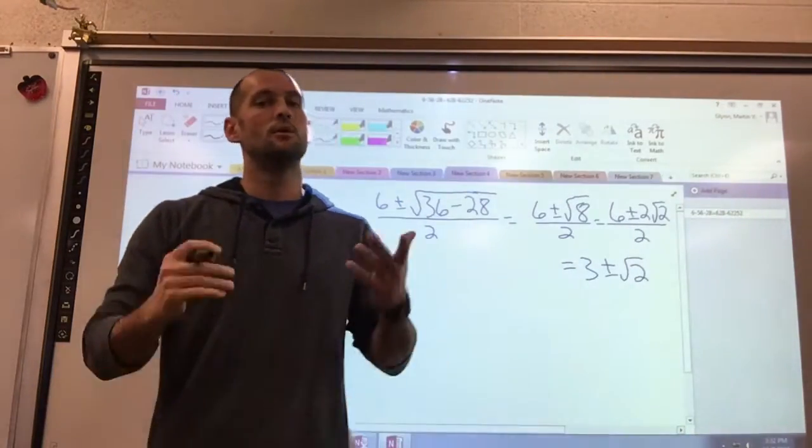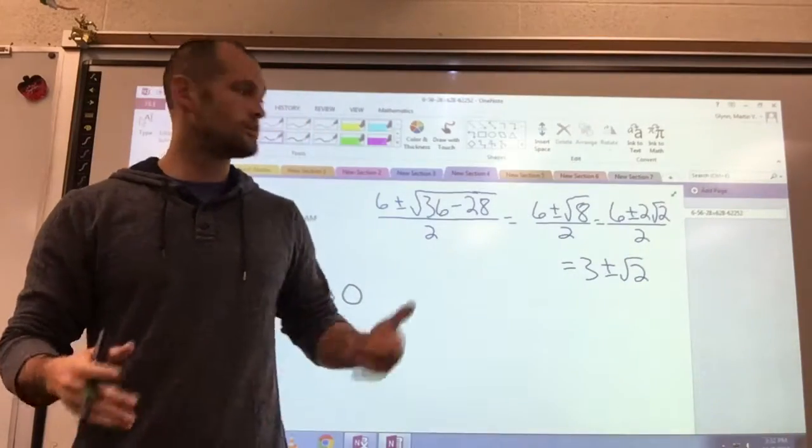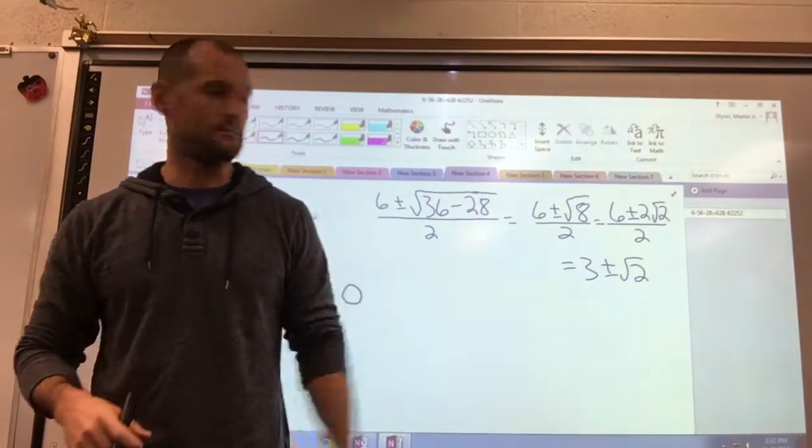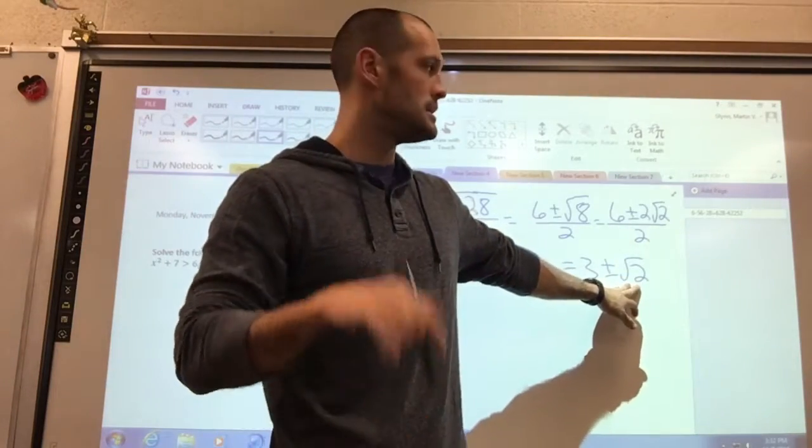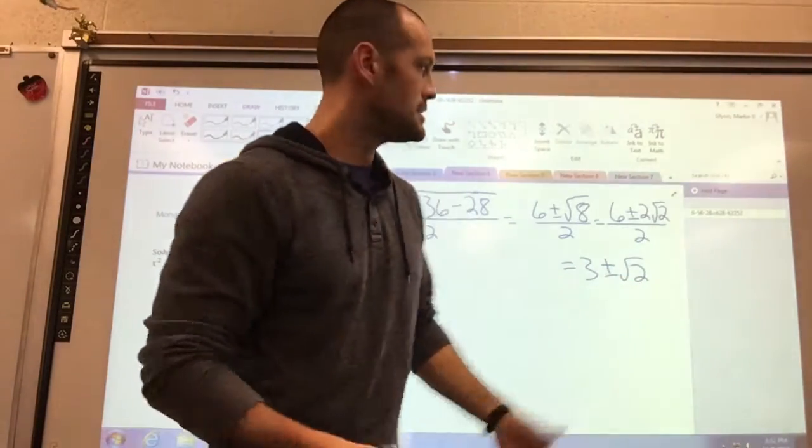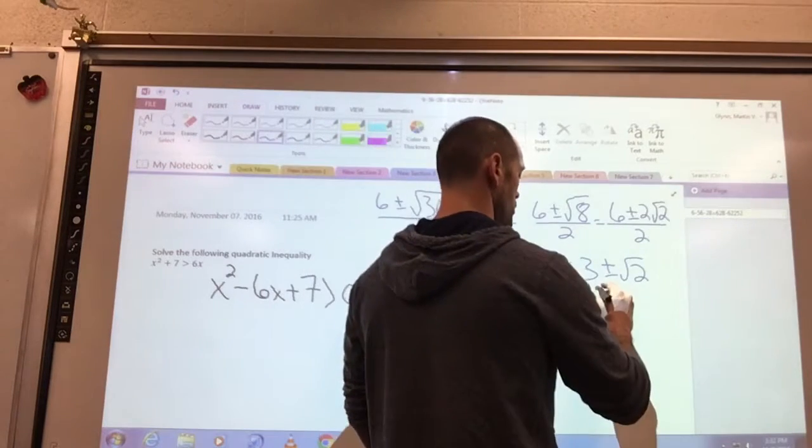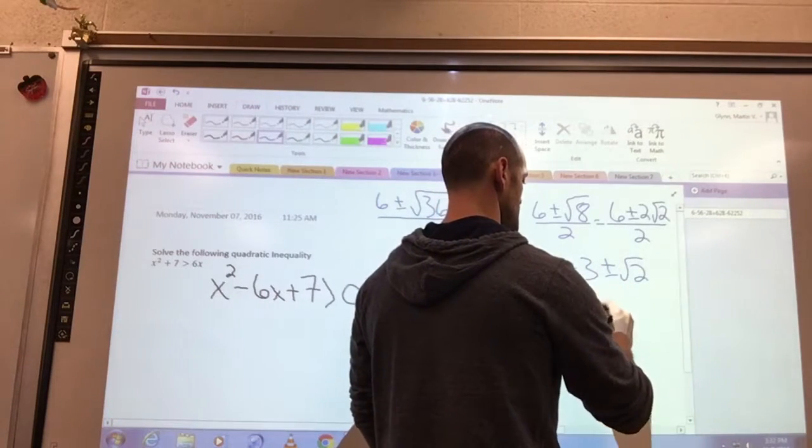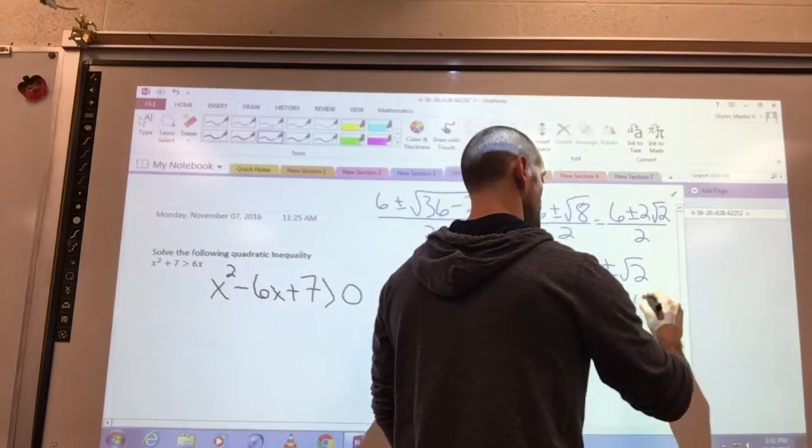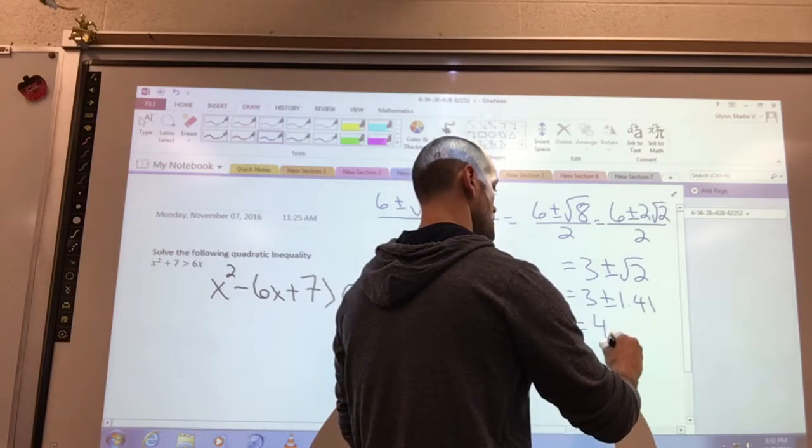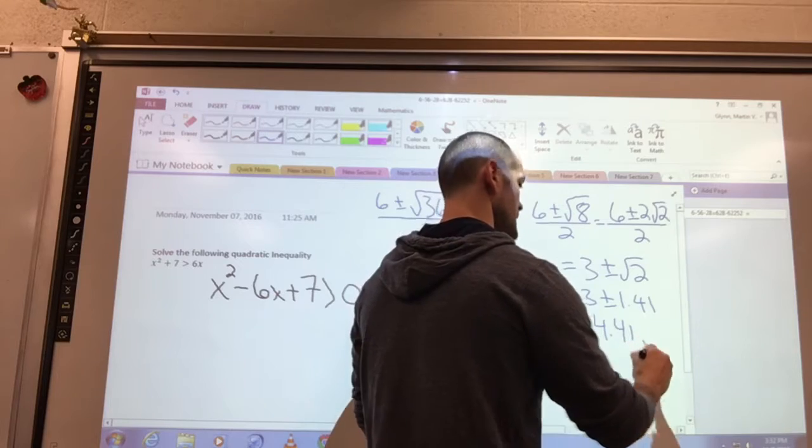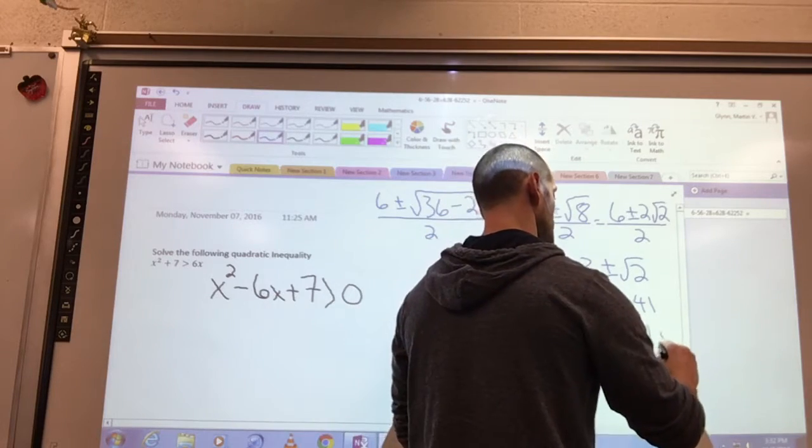Now that's as far as you go with an exact answer, but we have to test this, so we need actual numbers that we can put on a number line. So I'm going to have us estimate square root 2 to two decimal places, so about 1.41. So now I have 3 plus or minus 1.41, which gives me my two answers of 4.41 and 1.59.